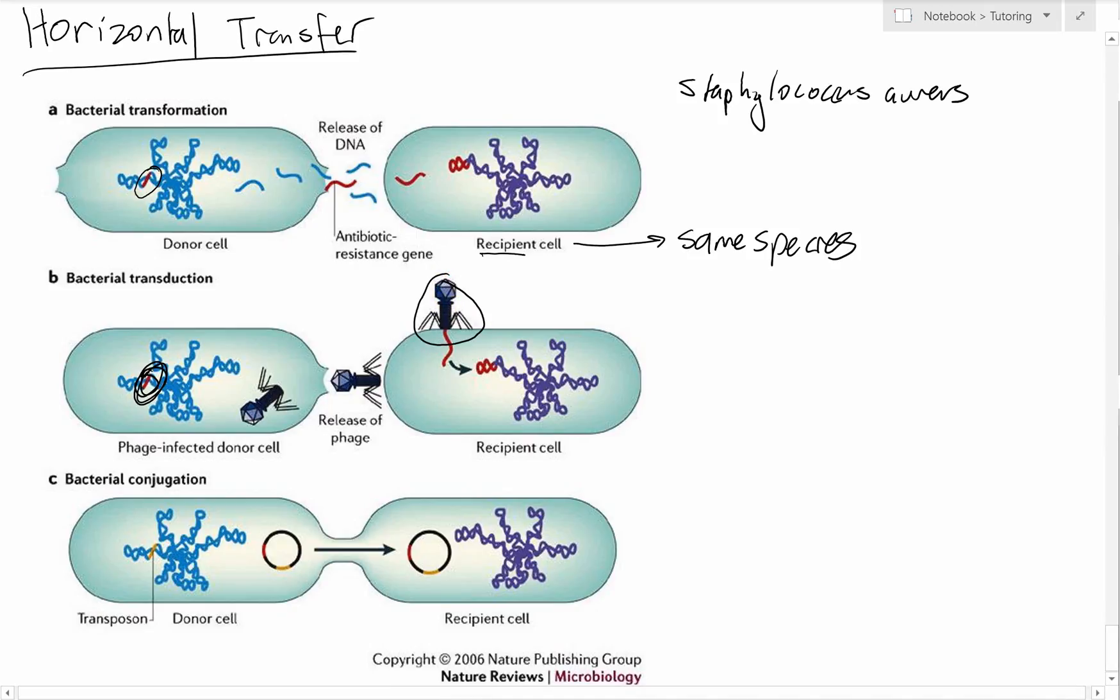Phages will bind receptors on the surface of bacteria and they can only infect bacteria that have those certain receptors, which is the same reason that bacteriophages can't infect ourselves—because we don't express those receptors. The bacteriophage will generally have a range that might be limited to just one species or could be broad amongst a family. It will allow this phage to spread this gene of interest into any recipient cell that the phage can infect.